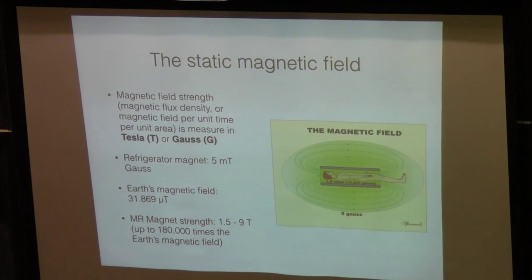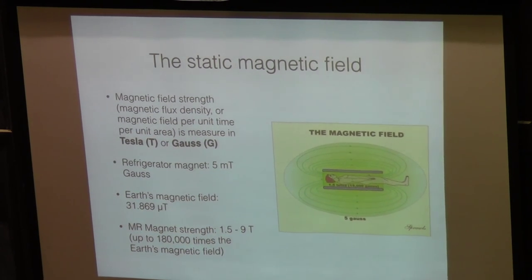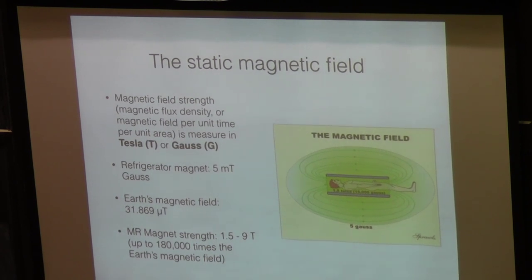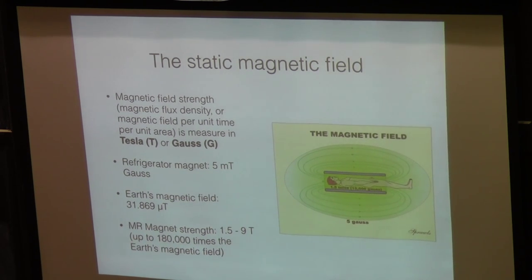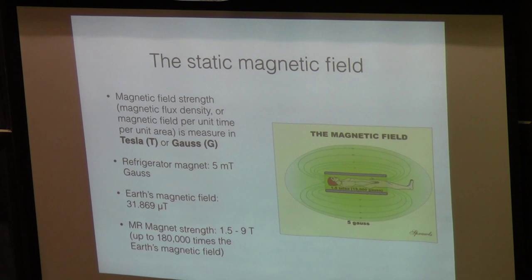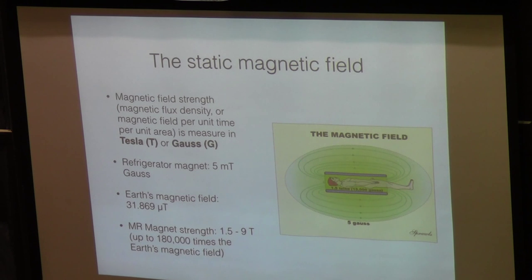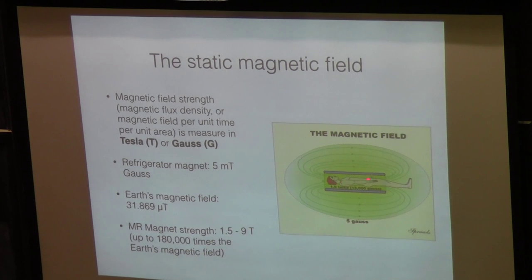There's a really big magnetic field, measured in Teslas — basically the magnetic flux density, or magnetic field per unit area. To give you an idea of how big the magnet is: a refrigerator magnet is five milli-Teslas and the Earth's magnetic field is thirty-one micro-Teslas. MRI magnets range from 1.5 to 9 Tesla. Here at Hopkins we have three Tesla and seven Tesla scanners, so at the most extreme you're about a hundred and eighty times the Earth's magnetic field.